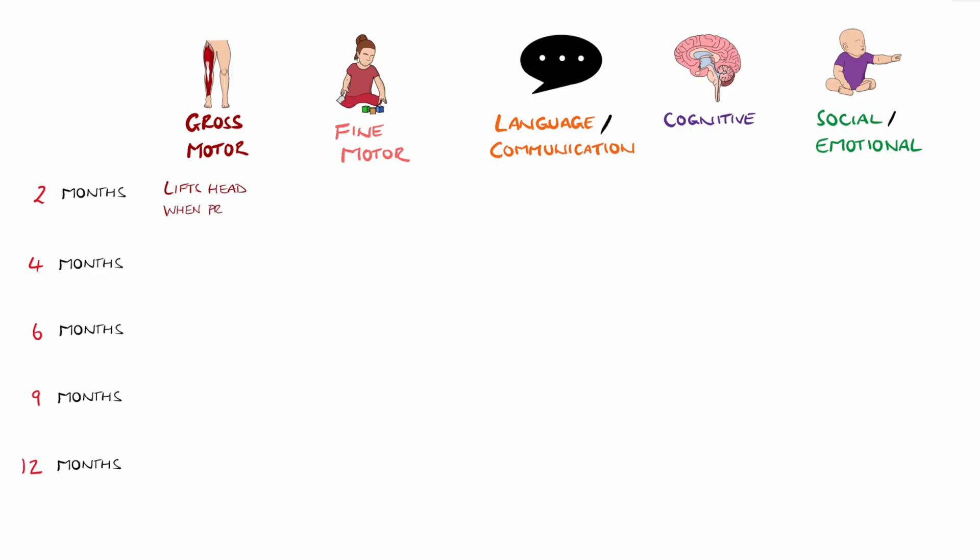Here are some key developmental milestones by age group. At two months, they should lift their head briefly when prone, open their hands, and follow objects with their eyes. They should coo and be alert to voice, and cognitively they typically prefer their usual caregiver and smile responsibly, known as the social smile.